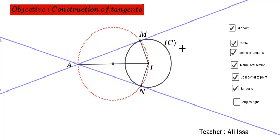To show that A-M is the tangent, we should show that the angle A-M-I measures 90 degrees. What is the measure of the angle A-M-I? Look at the figure.